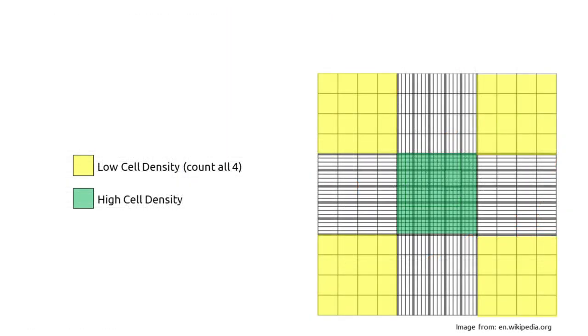As a general rule you want to be picking either the center grid or those four corners based on counting at least 200 cells within that grid area to get an accurate count.